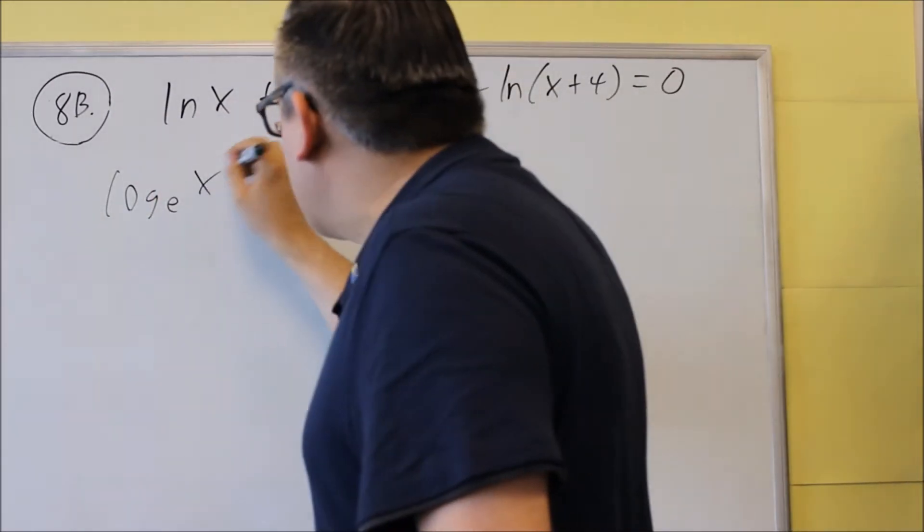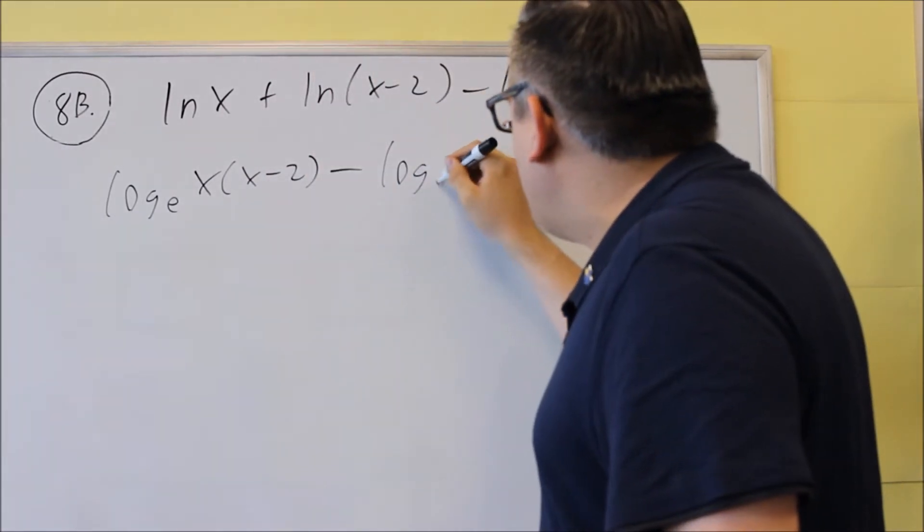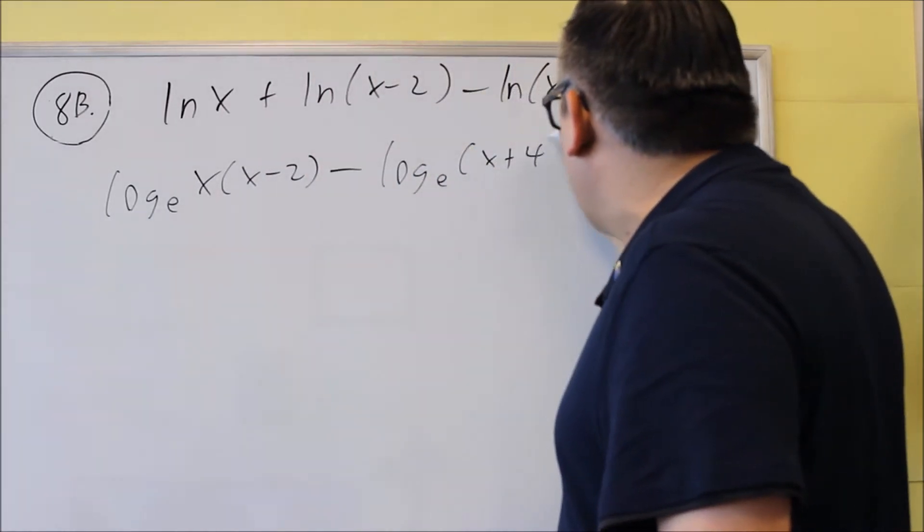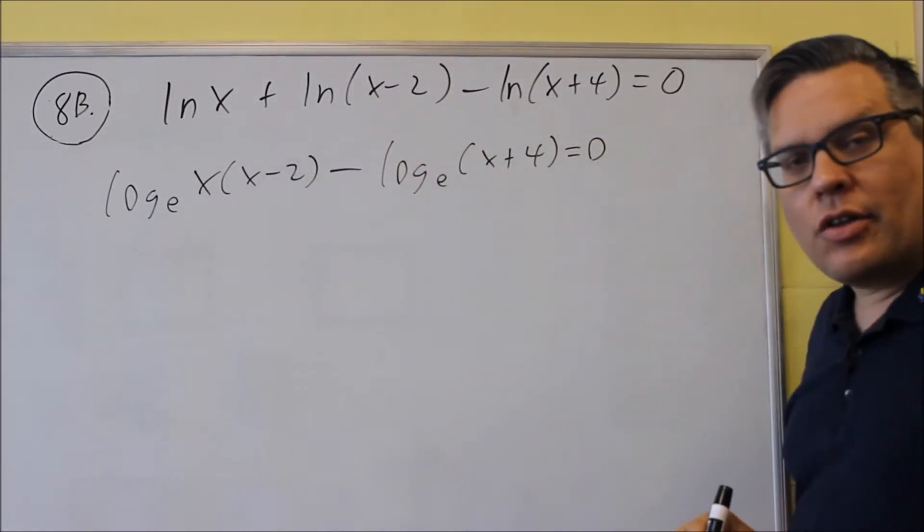and we're going to do x times x minus 2, and then we're just going to do another log base e here, x plus 4 equals 0. Everything else is the same. We just wanted to combine the first two there.